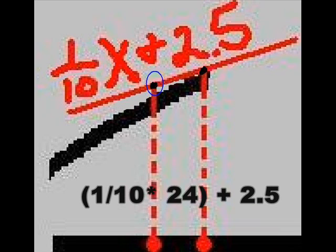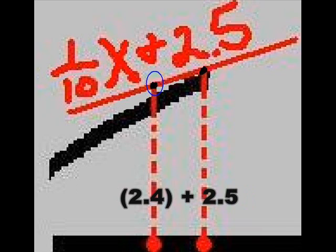I take the formula 1 tenth x plus 2.5. I take the x and plug in 24. It says 1 tenth times 24 plus 2.5. So what is 1 tenth of 24? Well, just move the decimal spot one point to the left and you get 2.4. 1 tenth of 24 is 2.4. Now my equation says 2.4 plus 2.5.